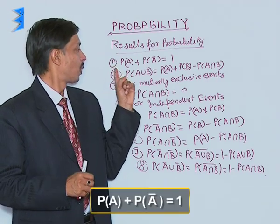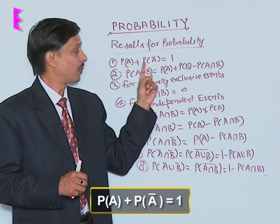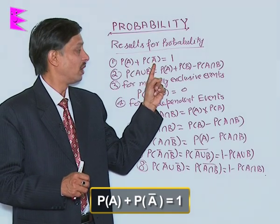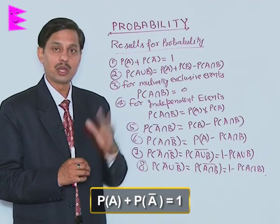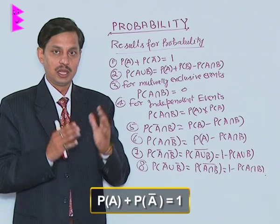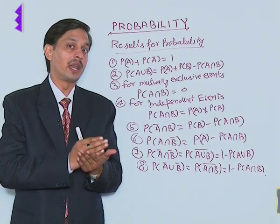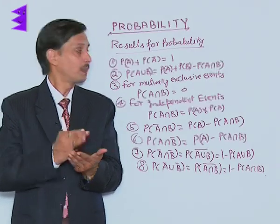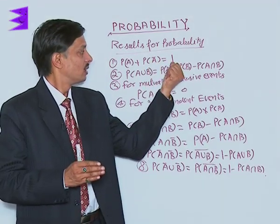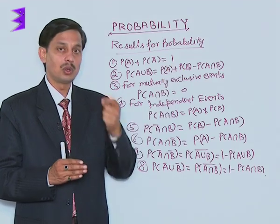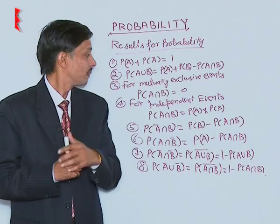First: probability of any event A plus probability of not happening of A is 1. That is, probability of occurrence plus probability of non-occurrence — their sum is always 1.